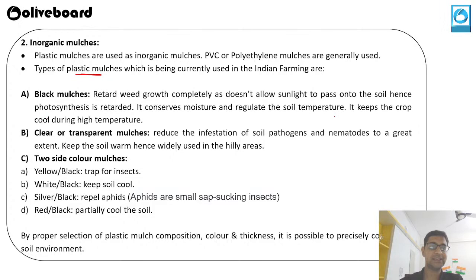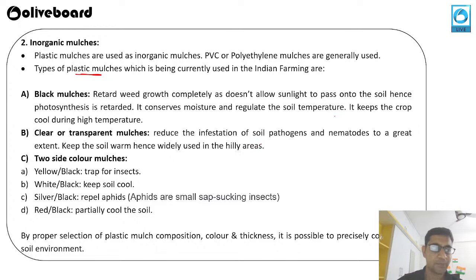The second type is clear or transparent mulch, through which you can see what is going on inside the soil. It is used to reduce the infestation of soil pathogens and nematodes, helps soil warmth, and is widely used in hilly areas.